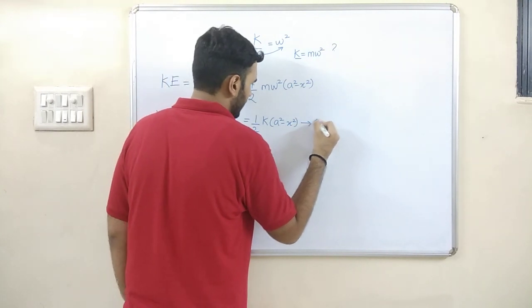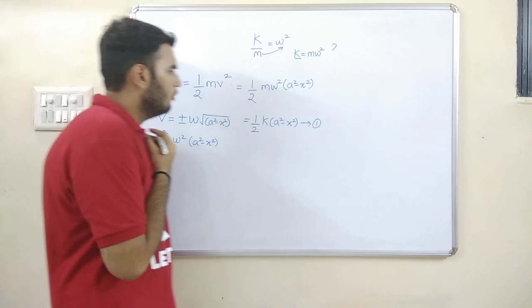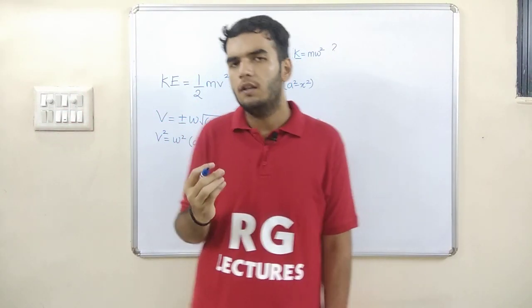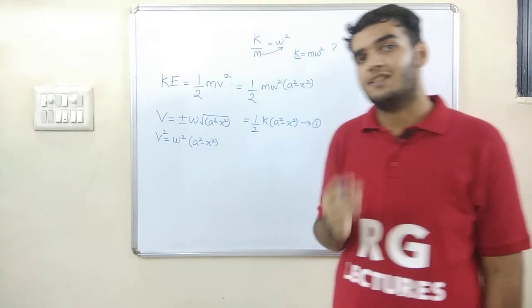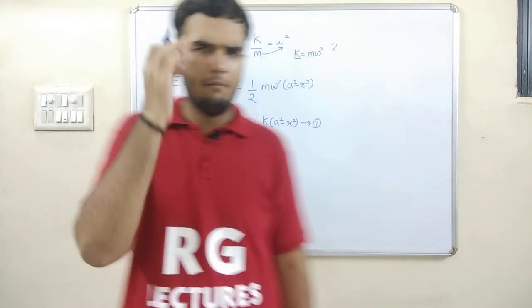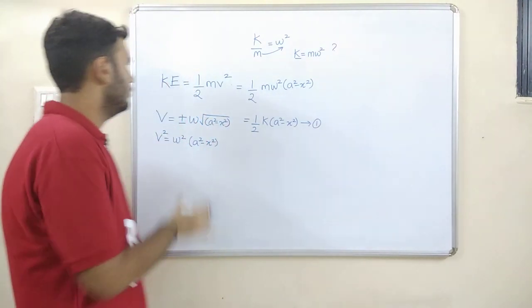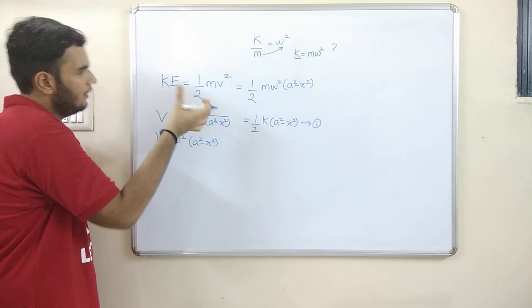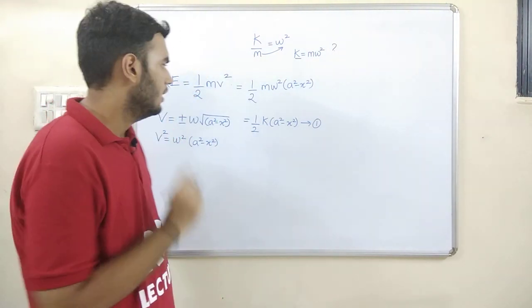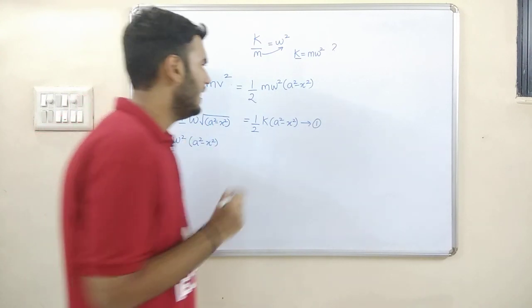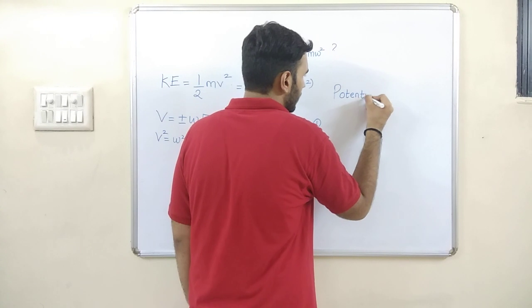Substituting k, I get: KE = half k (a² minus x²). That is my final equation for kinetic energy. It is actually difficult to remember the formulas for kinetic energy, potential energy, and total energy directly, so I suggest remembering the derivation method — it will take just 10 to 20 seconds to write and substitute the values.